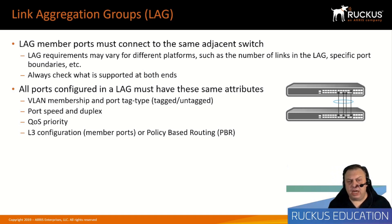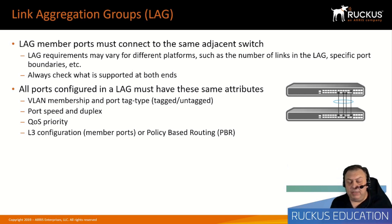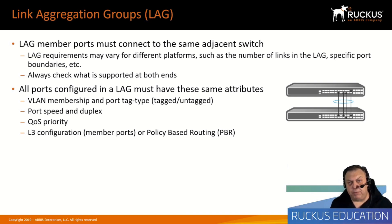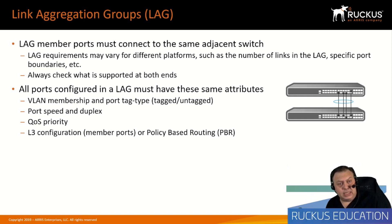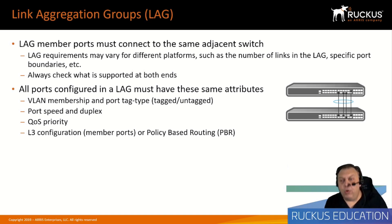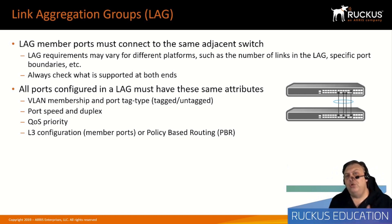All ports in a LAG must share the same attributes — these are software-configurable attributes. They must all be part of the same VLAN with the same tagging type, the same speed and duplex. You can't combine a 100 Gig, 40 Gig, 10 Gig, and 1 Gig link into a single aggregation group; no vendors support that. When you create a LAG, you're trying to evenly distribute traffic flows across member ports, so differing link speeds won't work. QoS priority and any layer three configuration must also be the same, since the ports form one logical link.